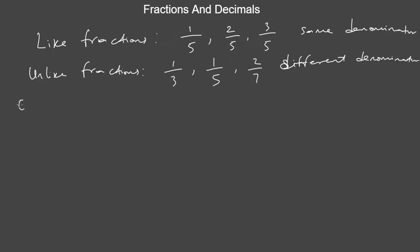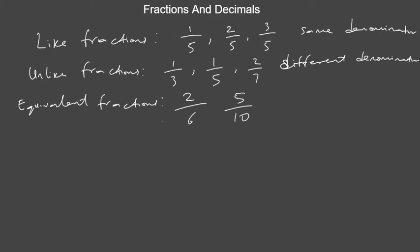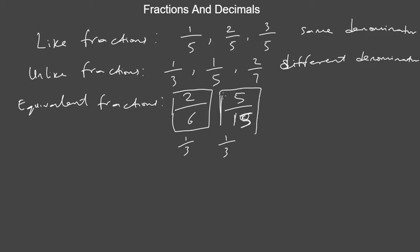We have another kind of fraction known as equivalent fractions. These are fractions that appear to be different, but if you simplify them, they give the same result. For example, 2 over 6 and 5 over 15: if you simplify 2 over 6 you get 1 over 3, and if you simplify 5 over 15 you also get 1 over 3. So these two fractions are equivalent.